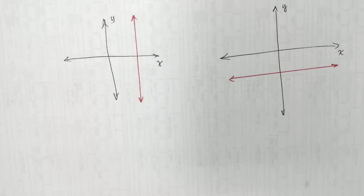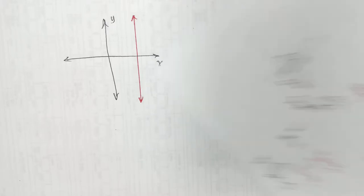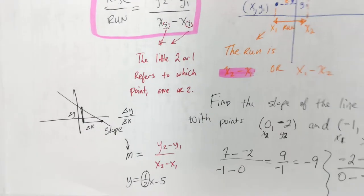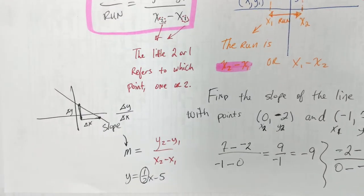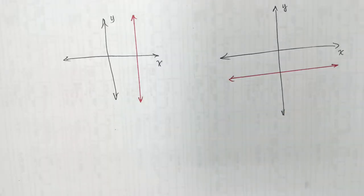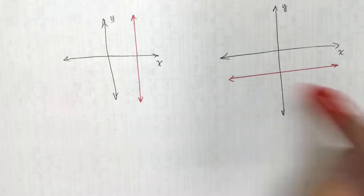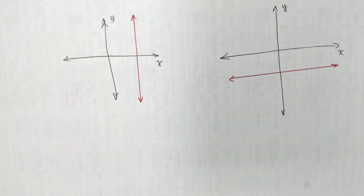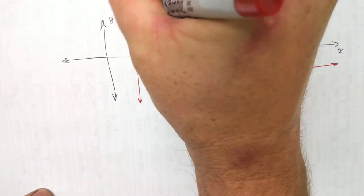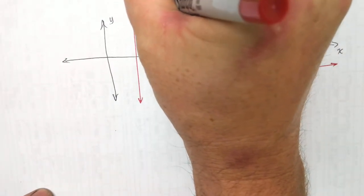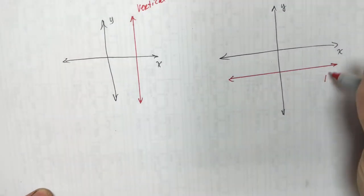As far as using the formula goes, all you've got to do is plug the numbers in the right place. If you mess it up, you probably just add one. But this is the thing that's going to mess you up conceptually. This is vertical, and this is horizontal.